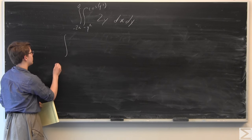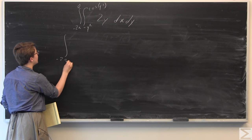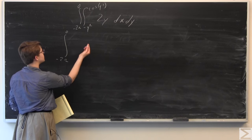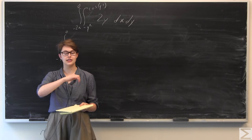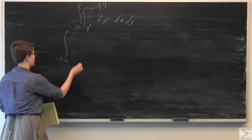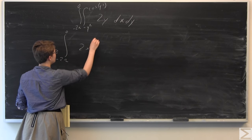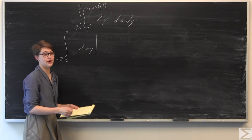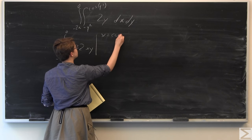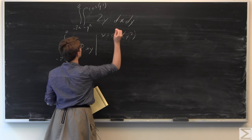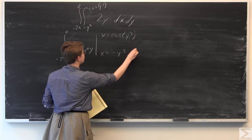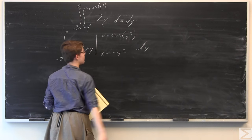This is going to be equal to evaluating the interior integral, keeping the bounds of integration the same on the outside. The integral of 2y with respect to x is going to be 2xy. This needs to be evaluated from x equals cosine of y squared to x equals negative y squared, with dy on the outside.